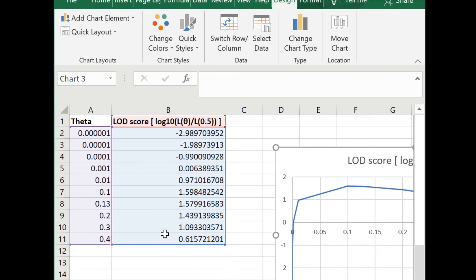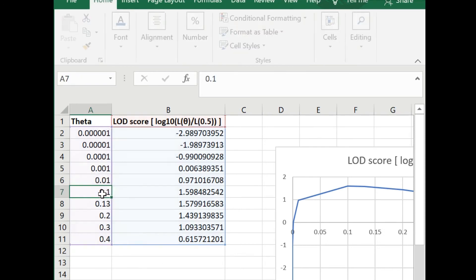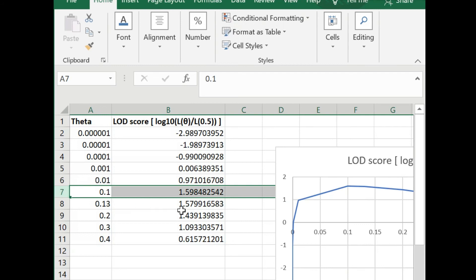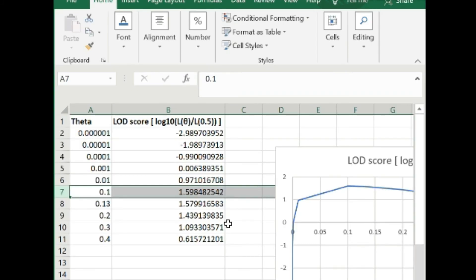It would be useful to comment that we may need more pedigrees or families to improve this LOD score so that it goes above the threshold of three, which by Bayesian statistics is considered to be a good threshold to have a high quality pedigree.